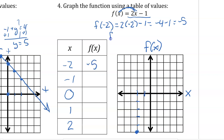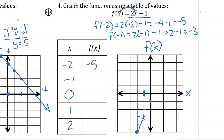Now f of negative 1: f of negative 1 equals 2 times negative 1 minus 1. 2 times negative 1 is negative 2, minus 1 is negative 3. So we go 1 to the left on x and down 3 for y. If we put in 0 for x, f of x equals negative 1 — so when x equals 0 at the y-axis, we go down 1. You really only need two points to define a line; I always like a third one just to make sure it's consistent.